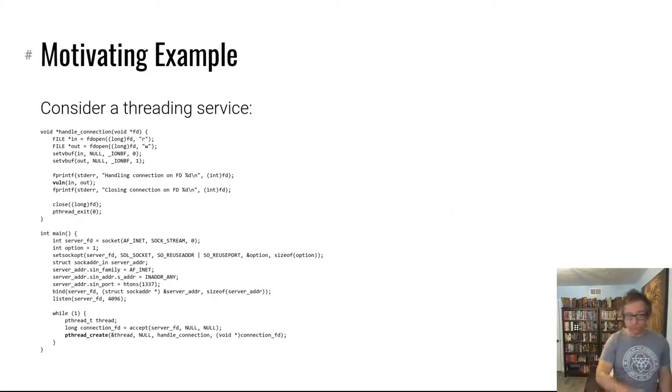We're going to look at this as a motivating example spread across two slides because it won't fit on one slide. This is just the network setup code. It is a threading server. In main it just starts up and listens on port 1337, and for every new connection it creates a thread. It invokes the handle_connection handler in every thread. This wraps the file descriptor in a file object so that we can use fprintf and fscanf and so forth, and then calls the vulnerable function.